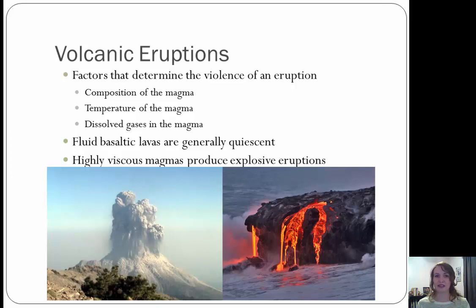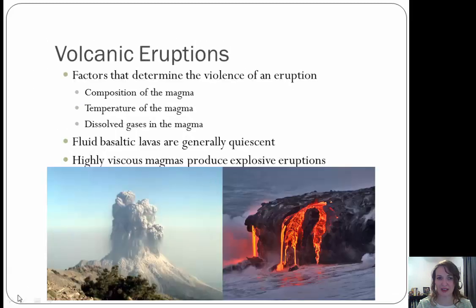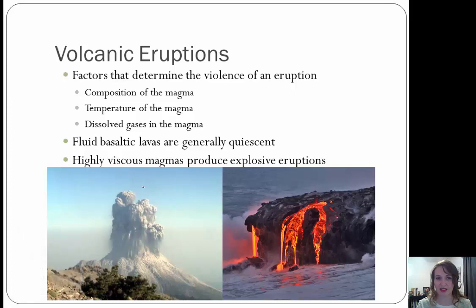Fluidal basaltic lavas are generally very quiet, while highly viscous magmas produce very explosive eruptions. In this image, that one is going to be highly viscous with an explosive eruption, while this is a very quiet eruption.